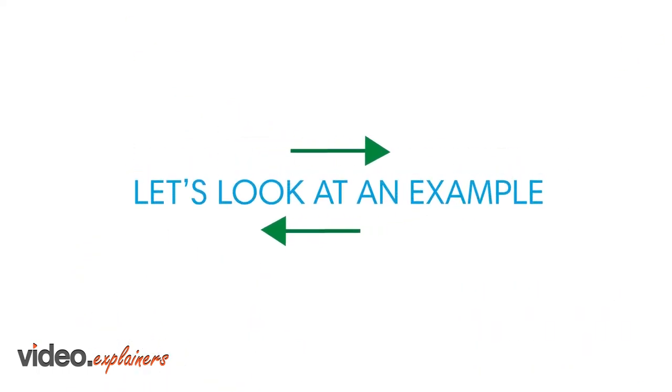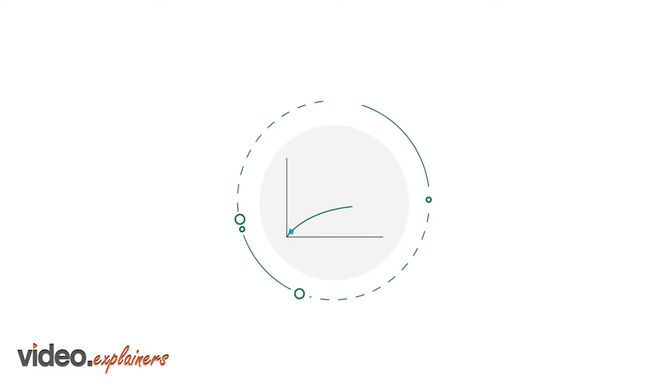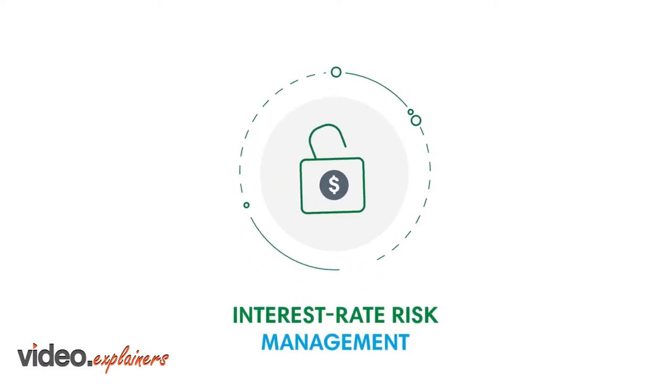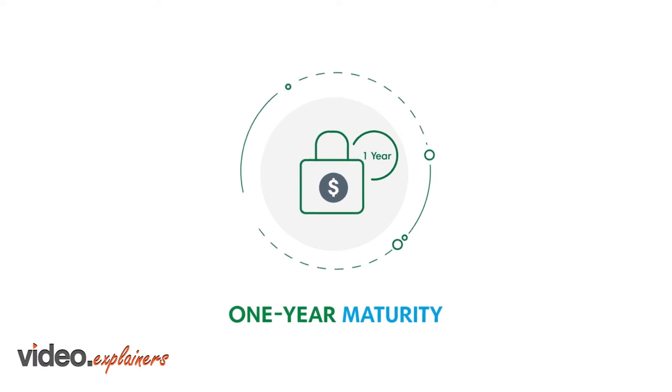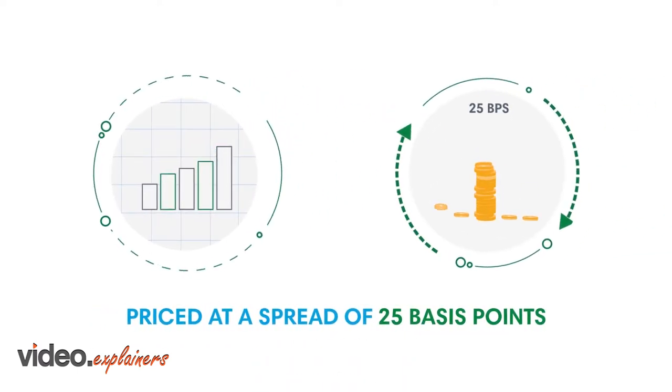To put this in perspective, let's look at an example. Say you wanted to fund at the front end of the curve to meet your interest rate risk management needs. To accomplish this, you use the one-year maturity DNA Floater with a monthly reset priced at a spread of 25 basis points.